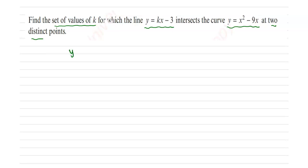Now consider the curve y equals kx minus 3 and y equals x squared minus 9x. It is given these two curves are intersecting, that is the line and the curve are intersecting at two distinct points, which means that the discriminant b squared minus 4ac is greater than 0.